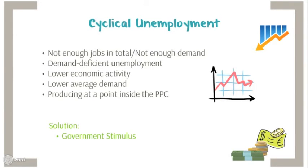Cyclical unemployment, also known as demand-deficient unemployment, occurs when there are not enough jobs in total and not enough demand. It also occurs due to low economic activity and when producing at a point inside the production possibility curve.